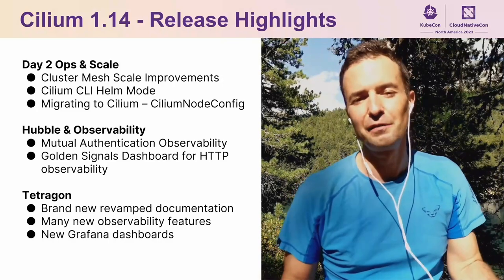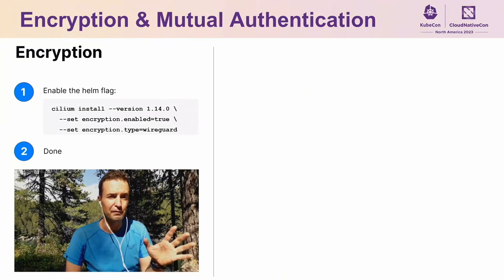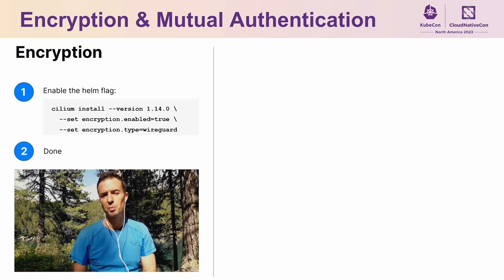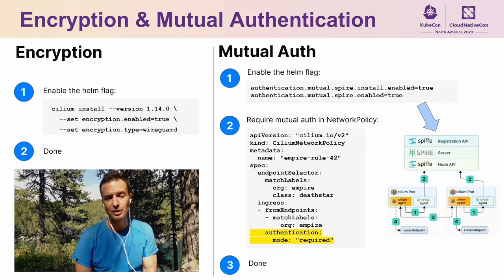The most exciting feature overall is effortless mutual authentication. So far you could easily encrypt all the traffic in your cluster. We have now added mutual authentication on top of that. Enable a single Helm flag to add a full SPIFFE/SPIRE stack managed by Cilium, and then add two lines to your network policy YAML to simply require mutual authentication for your services. If this is interesting to you, feel free to stop by the Cilium booth for a demo.